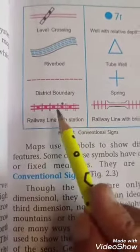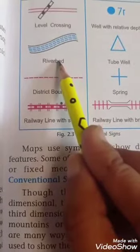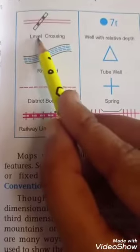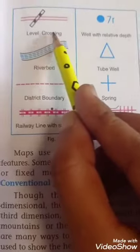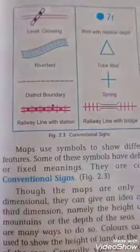This is railway line with the station. It means near the railway station. It indicates the district boundary. It indicates the river bed. And this is the level crossing where the railway track is crossed.